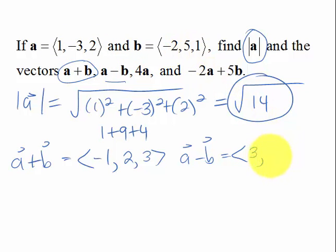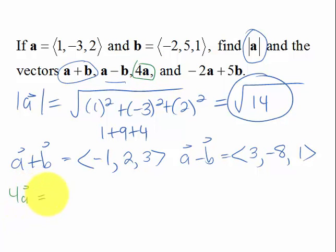Okay, now we're going to do 4A. So 4A just means 4 times each of the components of A. So that's going to be 4. Timesing negative 3 by 4 we have negative 12, and timesing 2 by 4 we have 8.